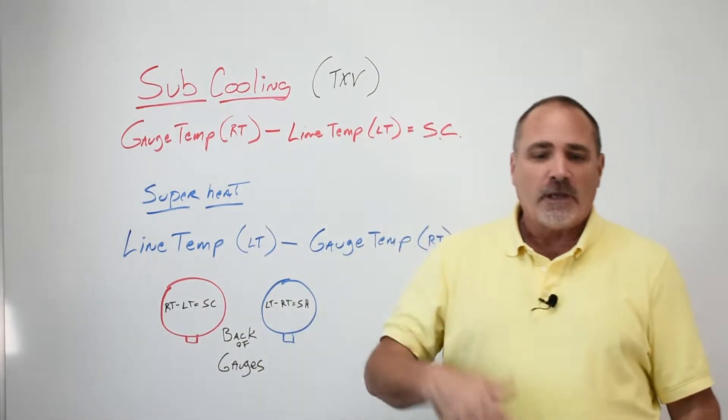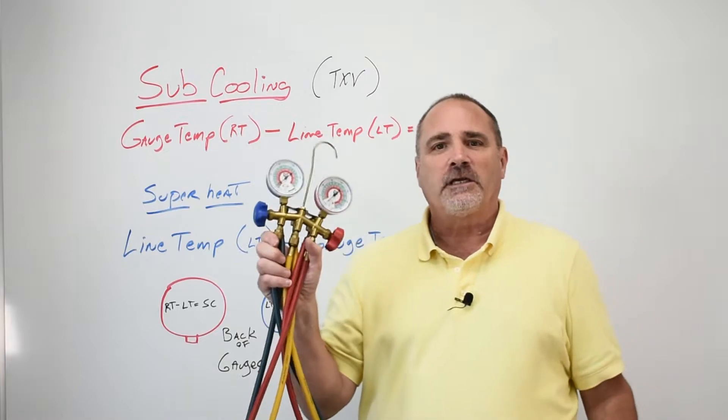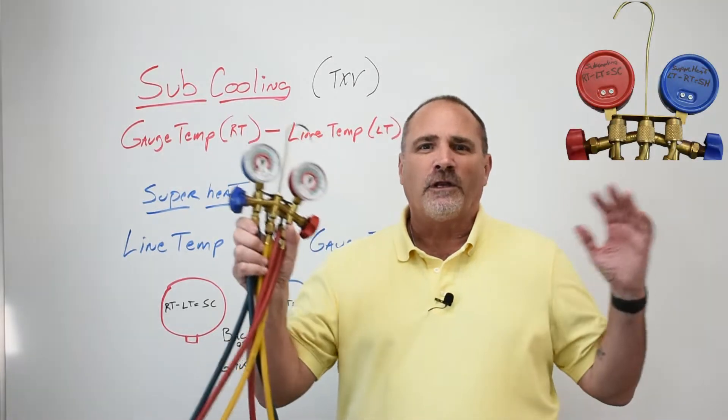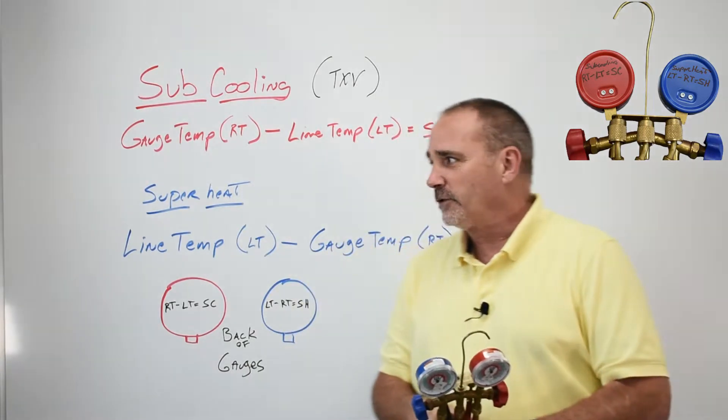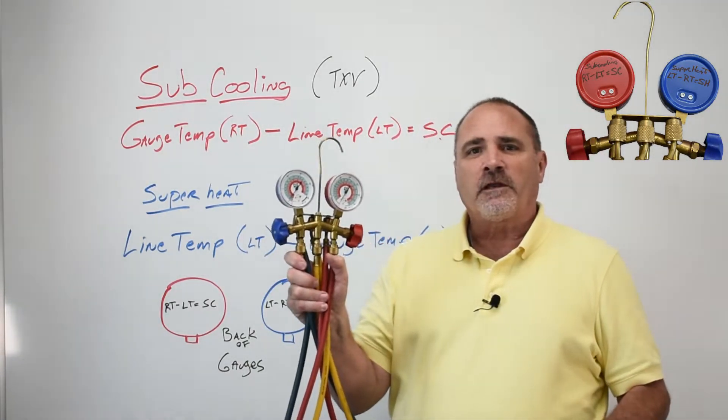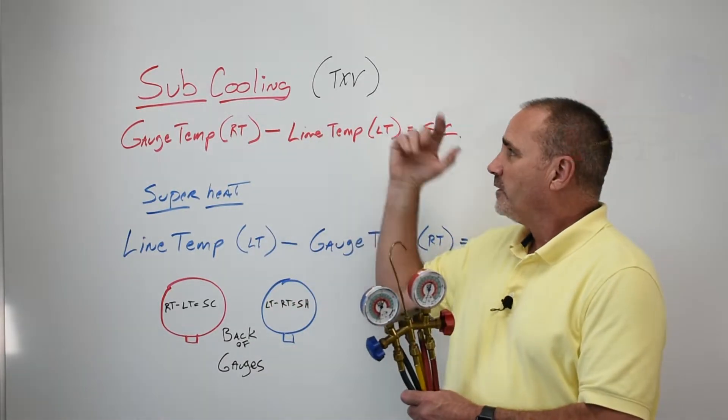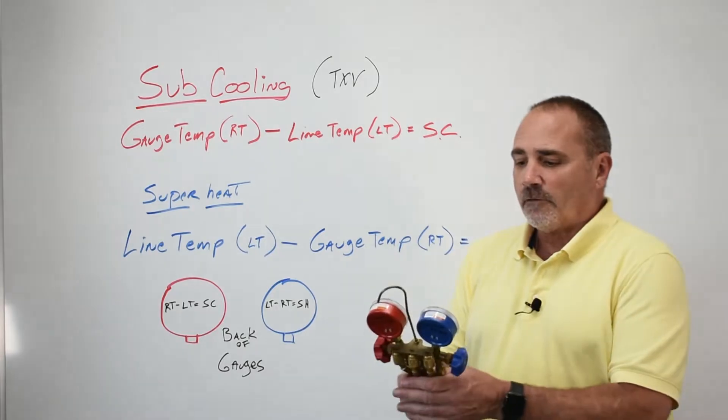But then they come up with a set of gauges like this, either for rougher conditions or rain where they don't want to necessarily take their eight hundred dollar gauges out. So they get a gauge set like this and then they keep forgetting how to figure out sub-cooling and superheat.